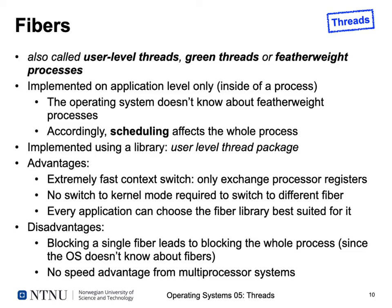Every application can choose a fiber library best suited for it — there are several, for example one implemented by Mozilla for Firefox, and green threads in Java. However, there are significant disadvantages: if a single fiber blocks, the whole process is put into the blocking state by the OS, since it doesn't know about different control flows. There is also no speed advantage from multi-processor systems, because the scheduler schedules a single process on a single CPU.